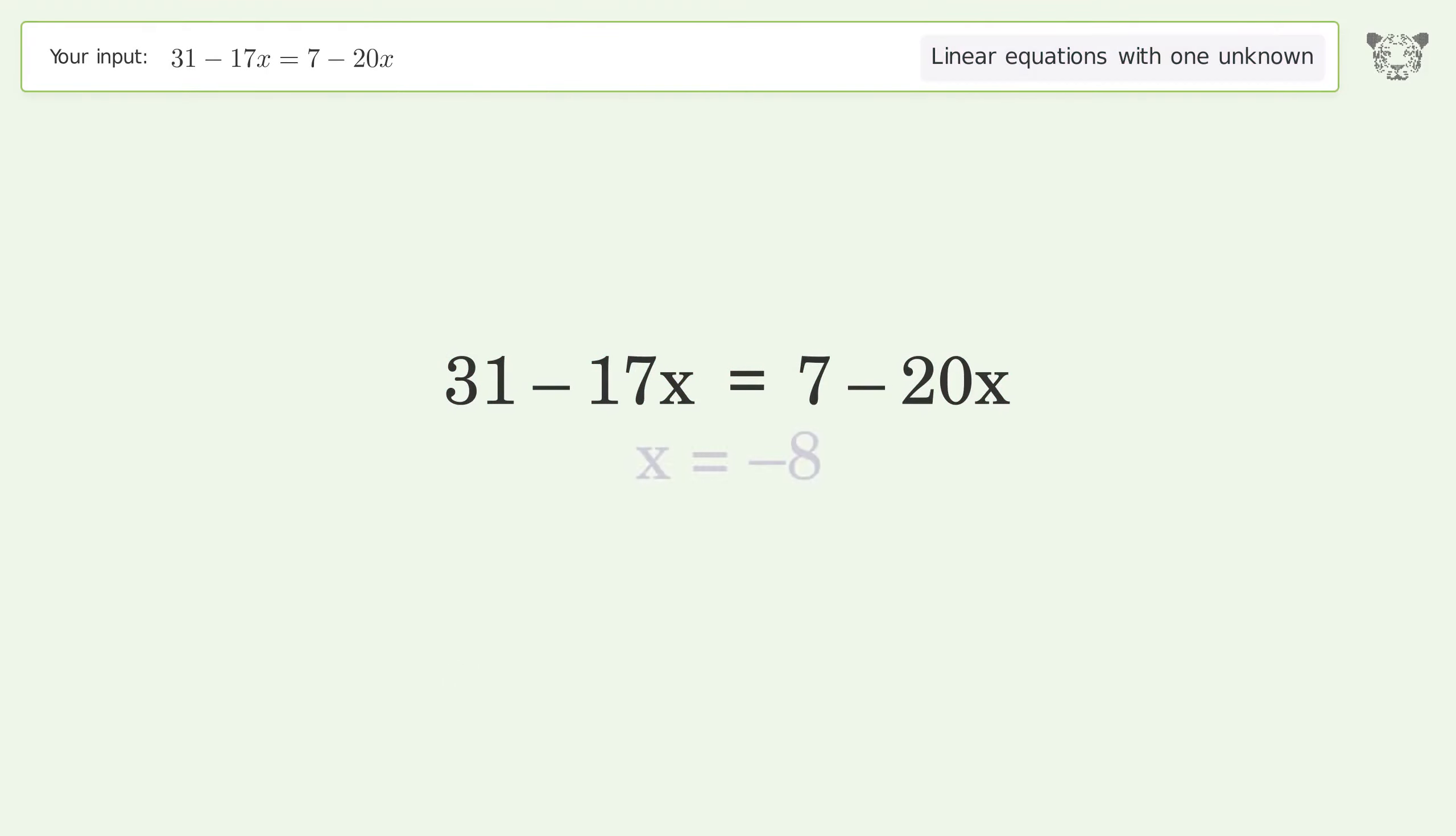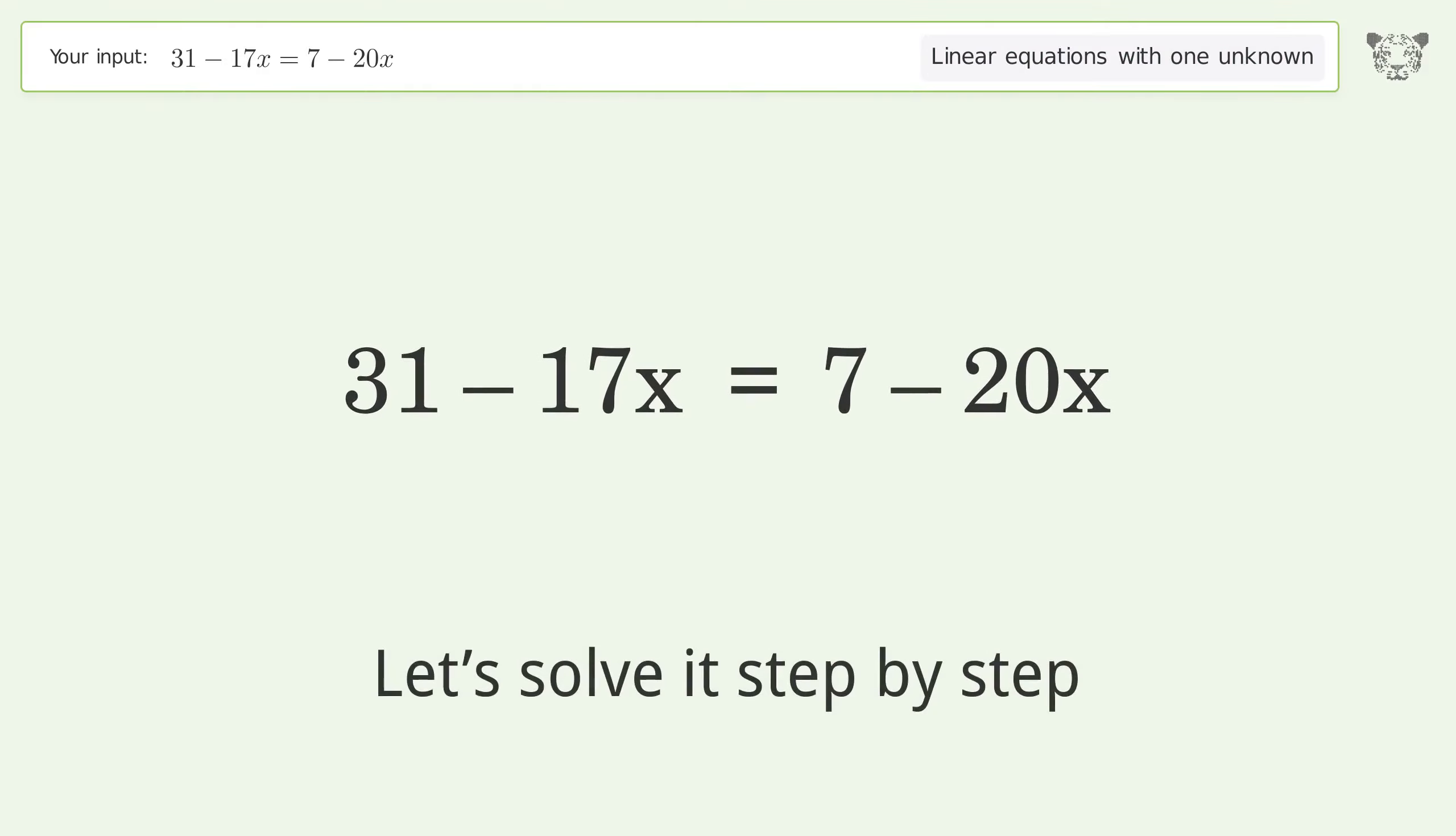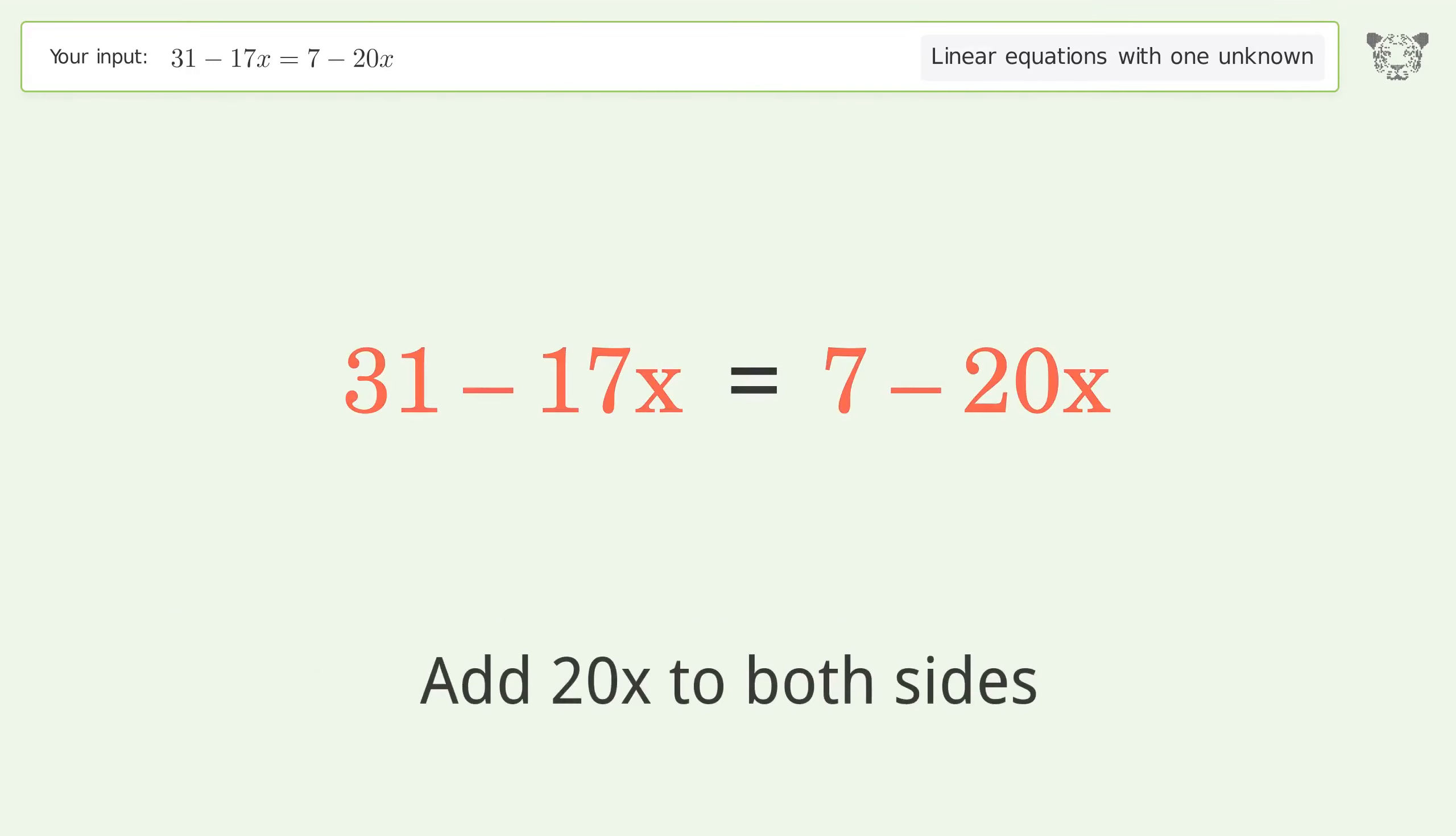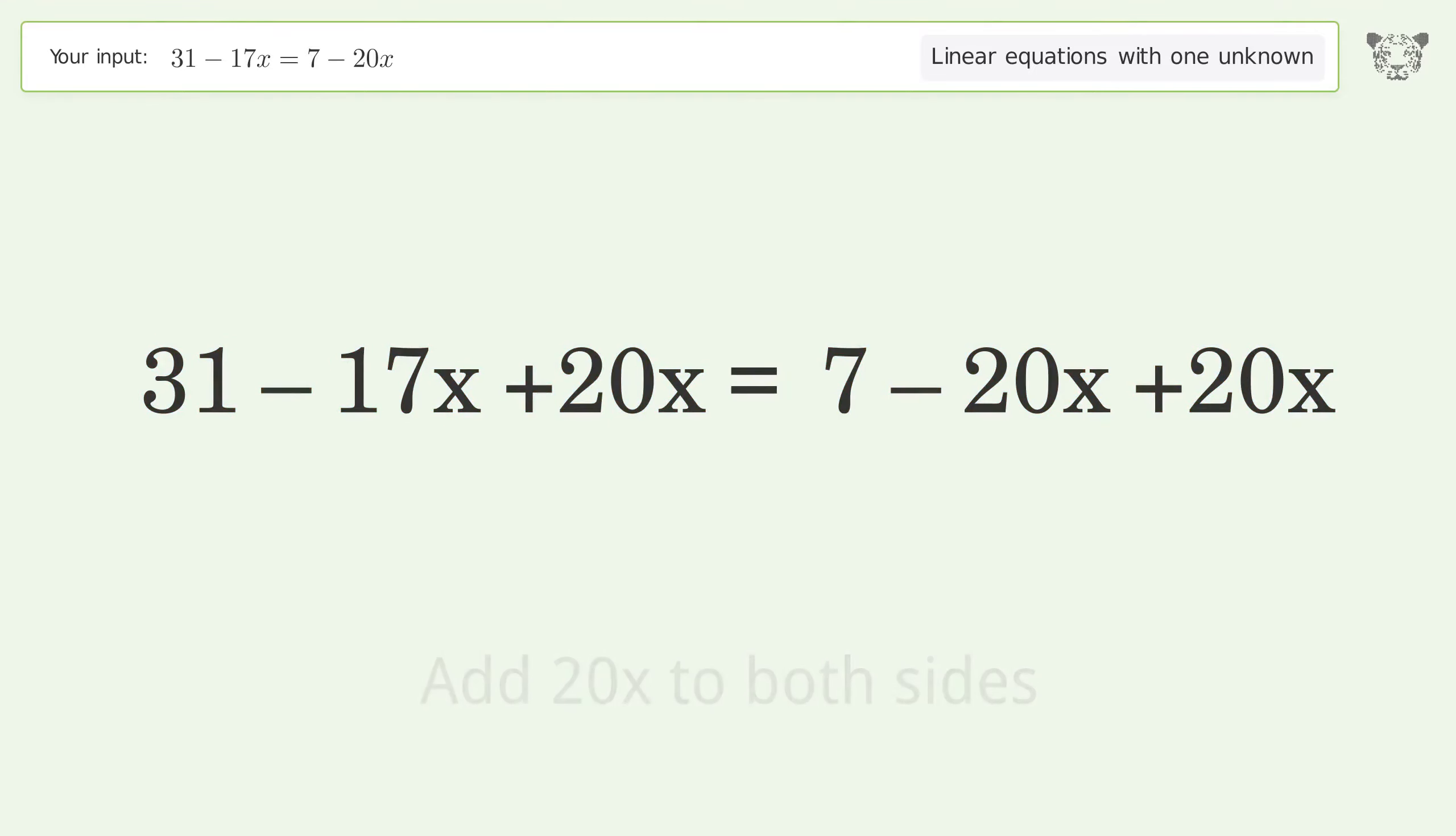Let's solve this linear equation with one unknown. The final result is x equals negative 8. Let's solve it step by step. Group all x terms on the left side of the equation. Add 20x to both sides.